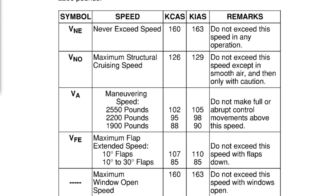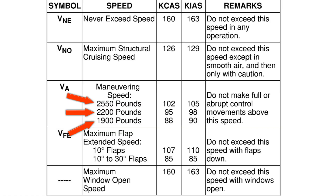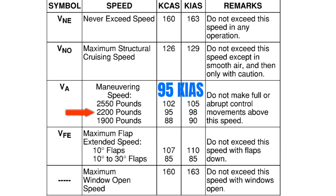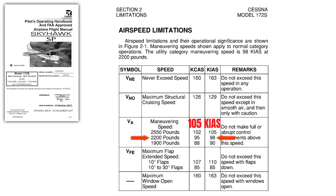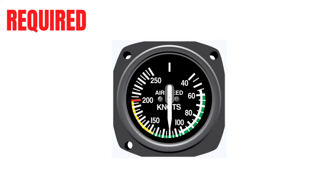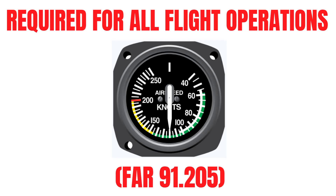Looking at the POH for this Cessna 172 Sierra, you'll notice there's typically more than one maneuvering speed, because this speed is based on the weight of your airplane. Let's say my airplane weighs 2,200 pounds and I'm flying at an indicated airspeed of 95 knots — VA in this case is 98 knots. So below 98 knots I'm going to stall first. What if I'm flying at 105 knots? In that case, I'm more concerned about bending my wings. This is another reason why airspeed is so important — in fact, the airspeed indicator is required any time you go fly.